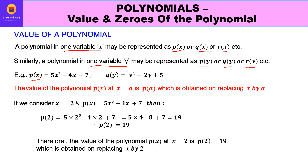If we have a polynomial using variable x, we will say p(x) = 5x² − 4x + 7. If it is using y, we can say y² − 2y + 5. This is how polynomials are denoted. Now, what is the value of a polynomial p(x)? It is the value at x = a, which is p(a), obtained by replacing x by a — that means we replace x by any number a and we get p(a), the value of that polynomial.